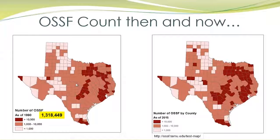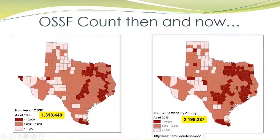As of 2015 — our most up-to-date data — the map shows that OSSFs are growing because people are moving into areas that don't have sewer. The density within each county is changing: many more counties now have over 10,000 systems. East of I-35, the number of OSSFs is growing tremendously, and even on the western side, counties are becoming darker on the map. The good news for us is that we've got plenty of work to do in OSSF education.